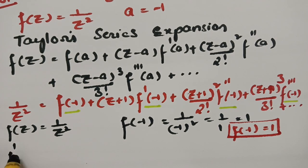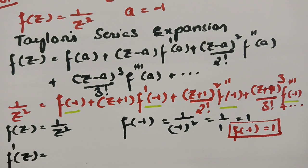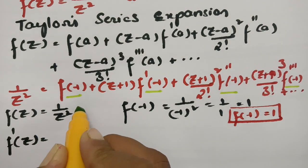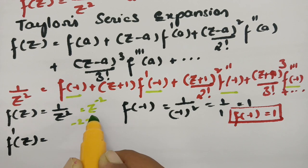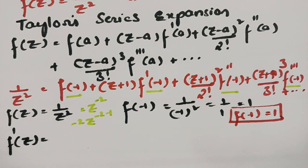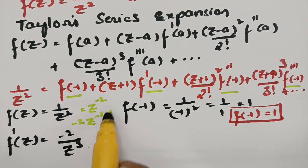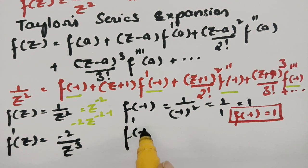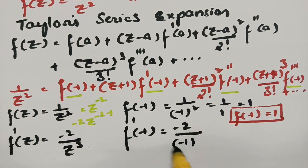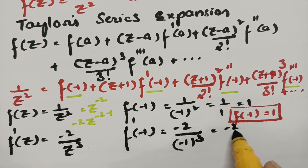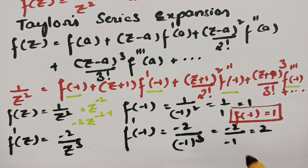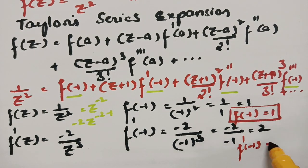For f'(−1), we need to differentiate f(z) = 1/z² = z^(−2). Using the power rule, f'(z) = −2·z^(−3) = −2/z³. Therefore f'(−1) = −2/(−1)³ = −2/(−1) = +2. So f'(−1) = 2.